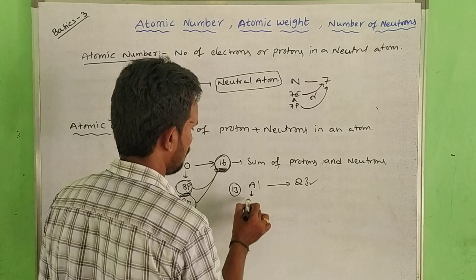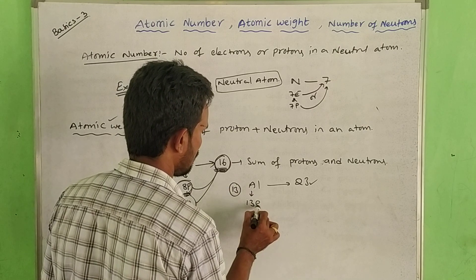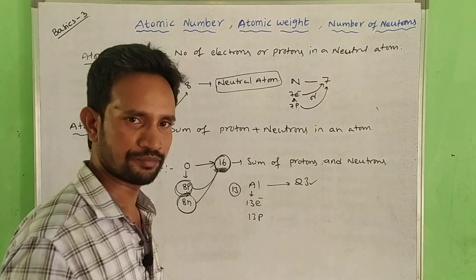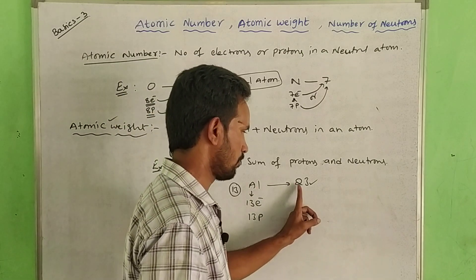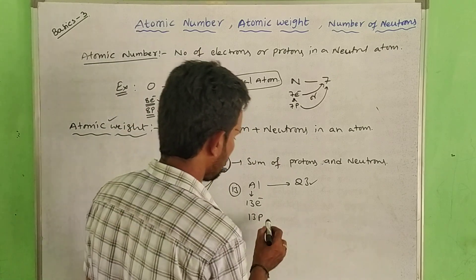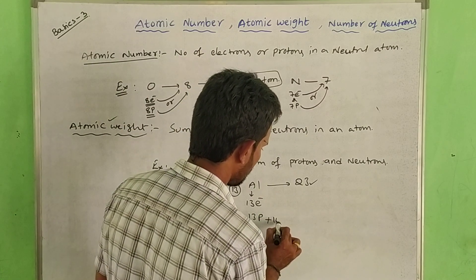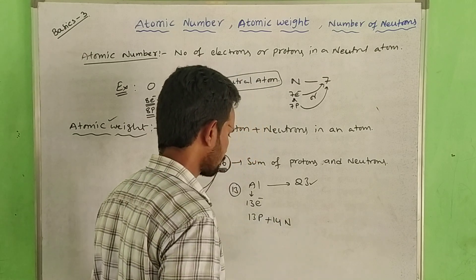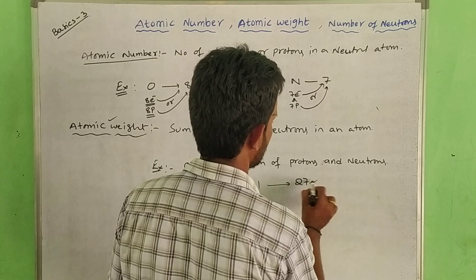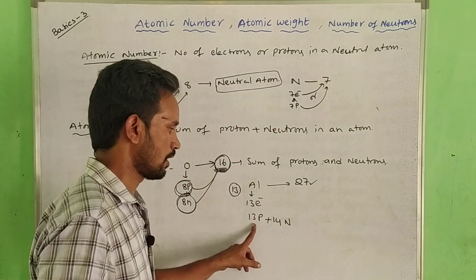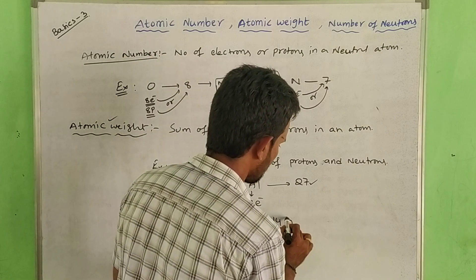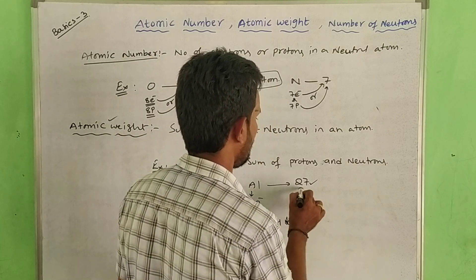For example, atomic number 13 — that means it has 13 electrons and 13 protons. Atomic weight is 27. So, 13 protons and atomic weight 27 means there are 14 neutrons.